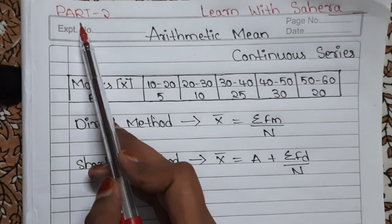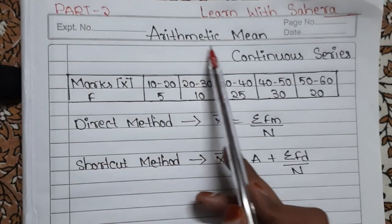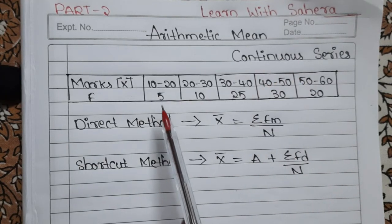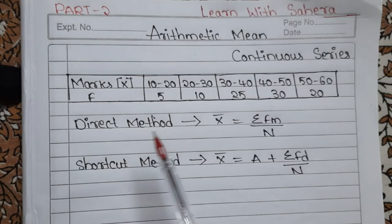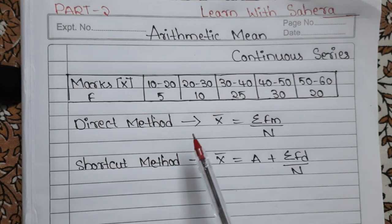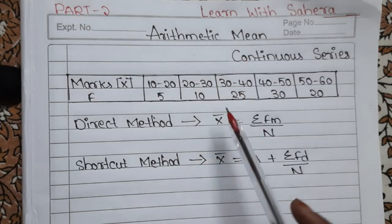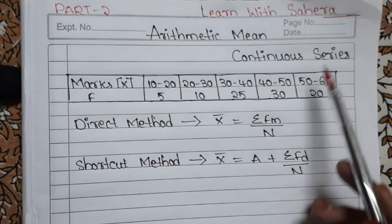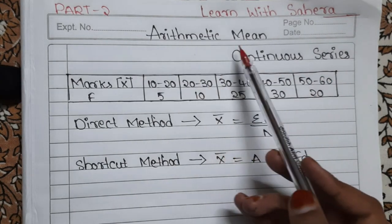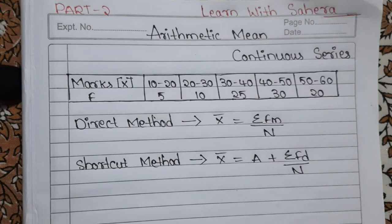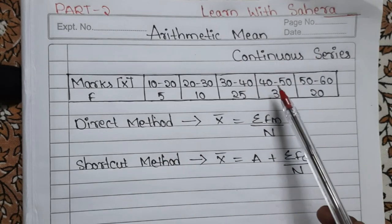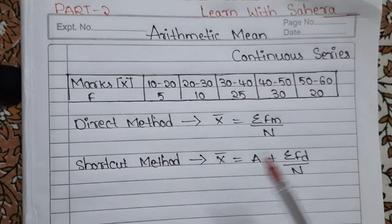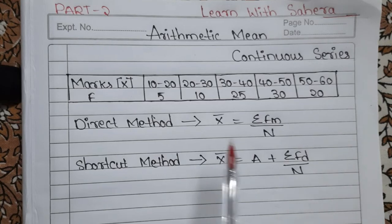In our previous video, part 1, we have seen the calculation of arithmetic mean in discrete series, which was ungrouped data. If you didn't watch that previous video, please watch it, because watching both videos only will make you perfect in calculation of arithmetic mean. Sometimes in the examination, they will ask you to calculate arithmetic mean in continuous series, and sometimes in discrete series. So it is really very important to be perfect with both.